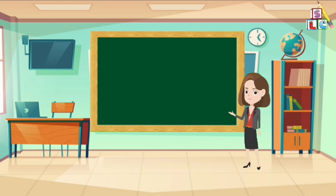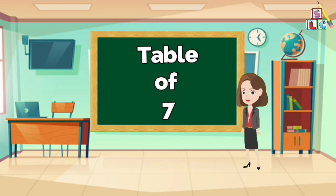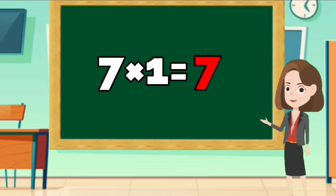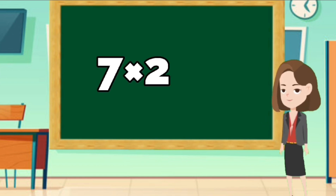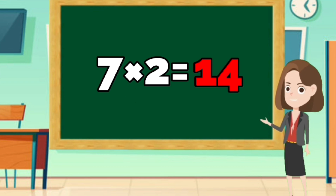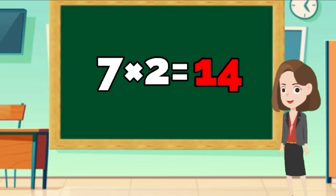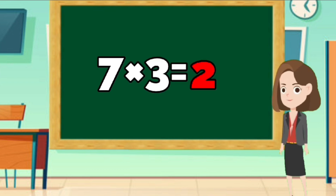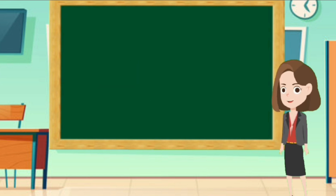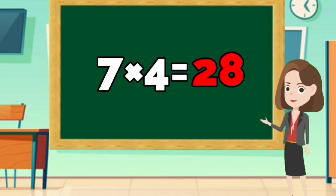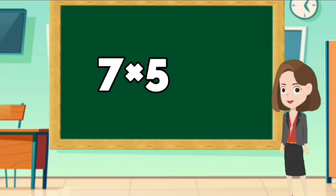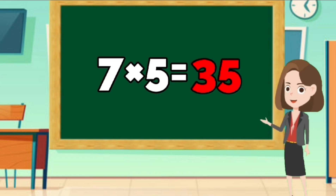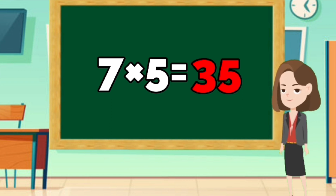Let's learn Table of Seven. 7 times 1 is 7. 7 times 2 is 14. 7 times 3 is 21. 7 times 4 is 28. 7 times 5 is 35.